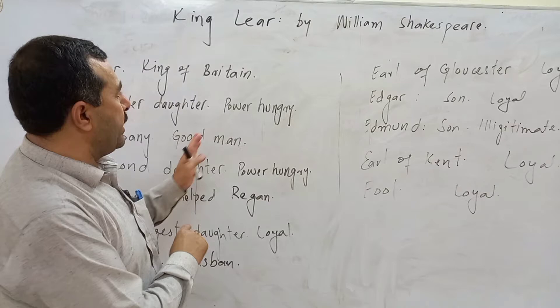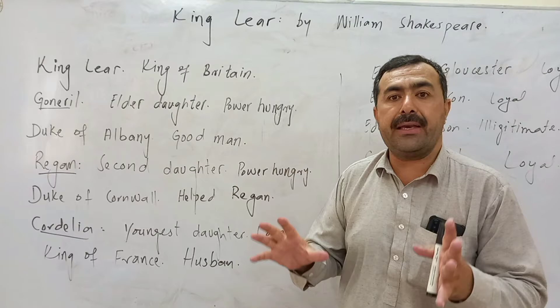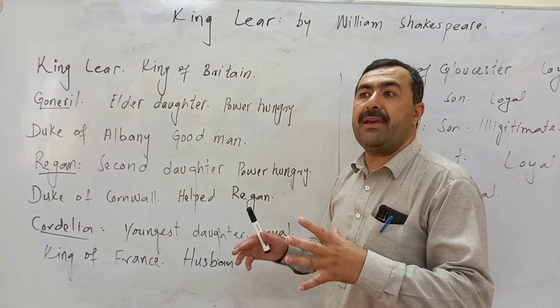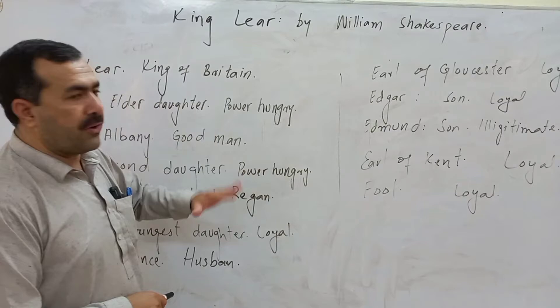When King Lear reached the house of Regan, she was visiting the Earl of Gloucester. The king goes there and once again Regan insults him in front of others — especially she insults the Fool. Goneril had already written in her letter that the hundred companions will make the treasury empty by eating. The king becomes very angry at this.